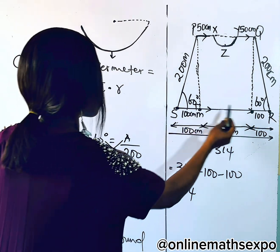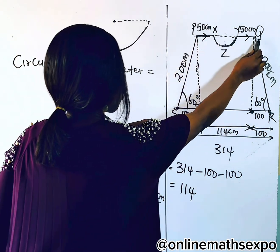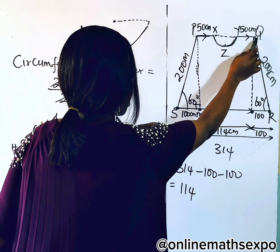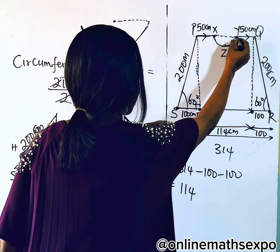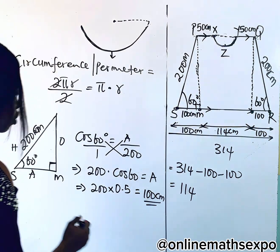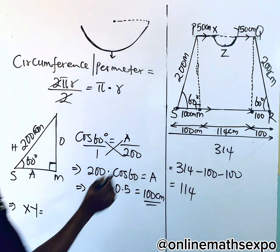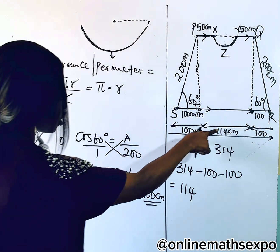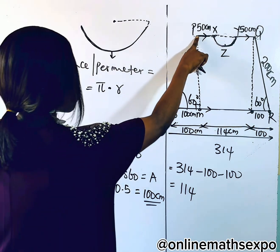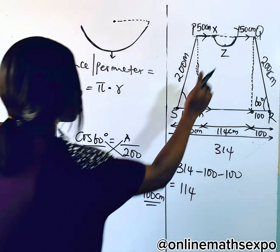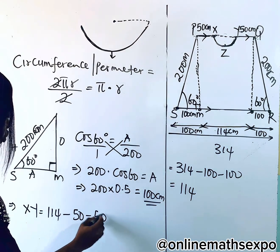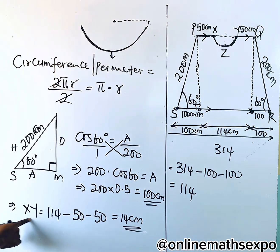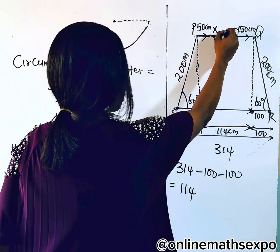If from here to here is 114, this is also 114 because it forms a rectangle. So if from here to here is 114, we can find length XY. To get XY: the total PQ is 114, then minus from here to here which is 50, then minus from here to here which is 50. When you subtract this, it gives you 14 centimeters. So line XY is giving us 14 centimeters.